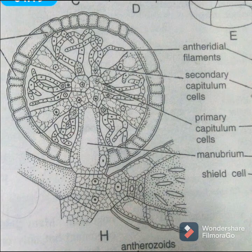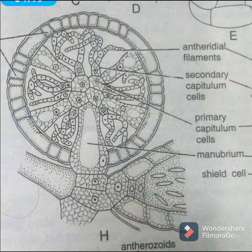The antherozoids are formed inside the antheridial cells, and each antheridium produces around 20,000 to 50,000 antherozoids — a very large number produced from these antheridial filaments.